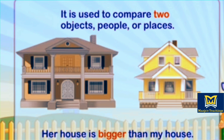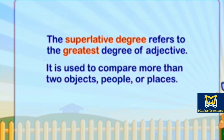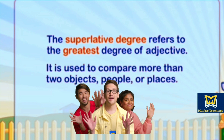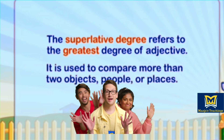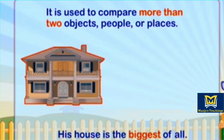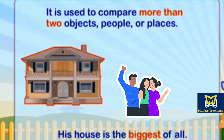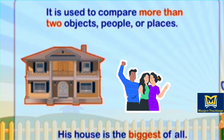Example: 'Her house is bigger than my house.' ER is added to the adjective. The superlative degree refers to the greatest degree of adjective. It is used to compare more than two objects, people or places. Example: 'His house is the biggest of all.' EST is added to the adjective big.